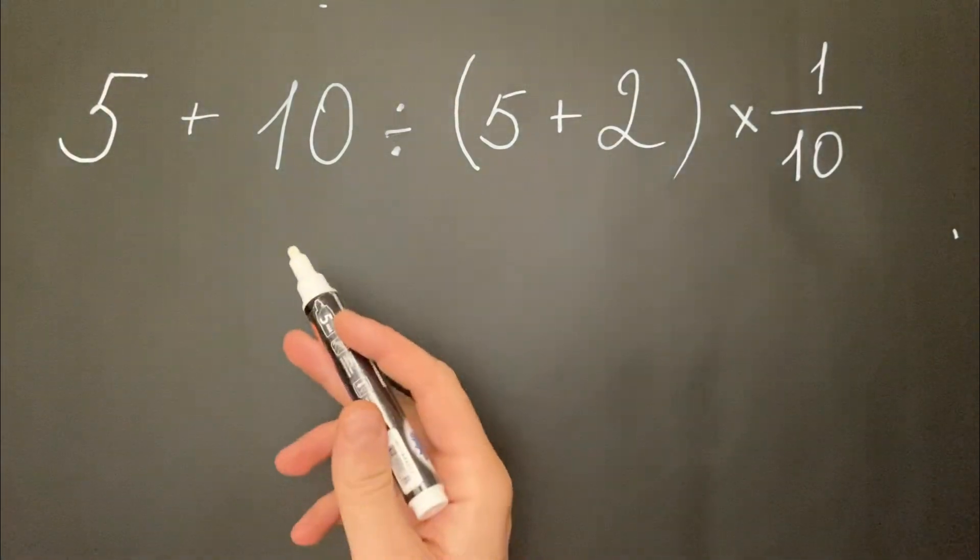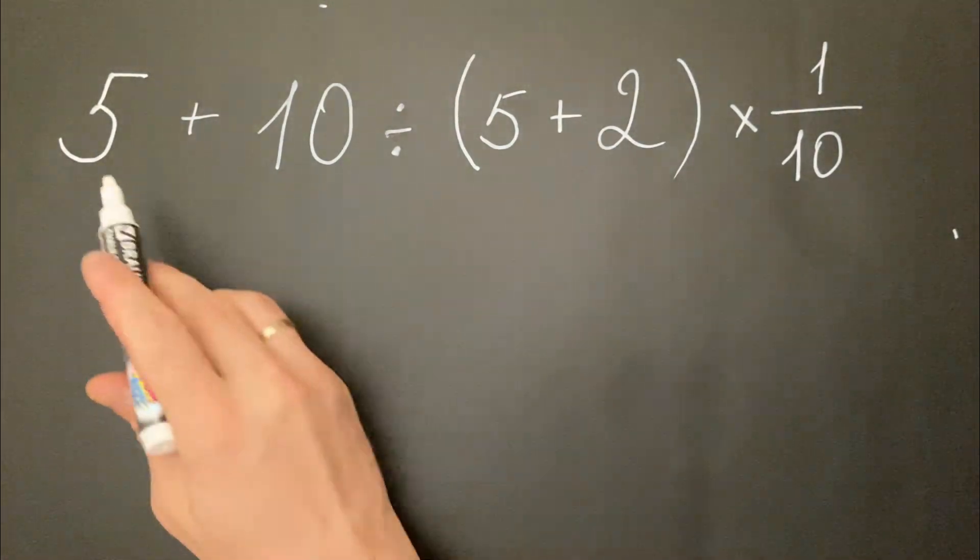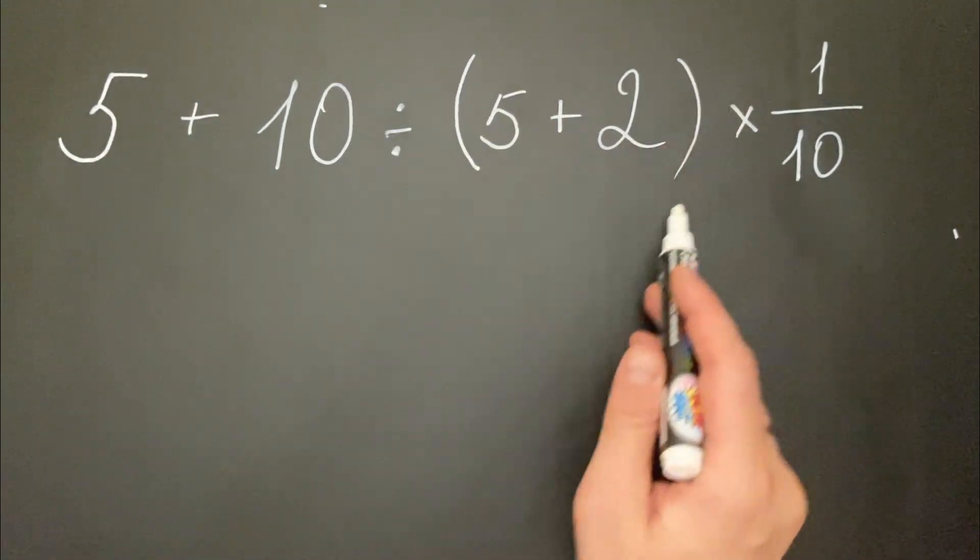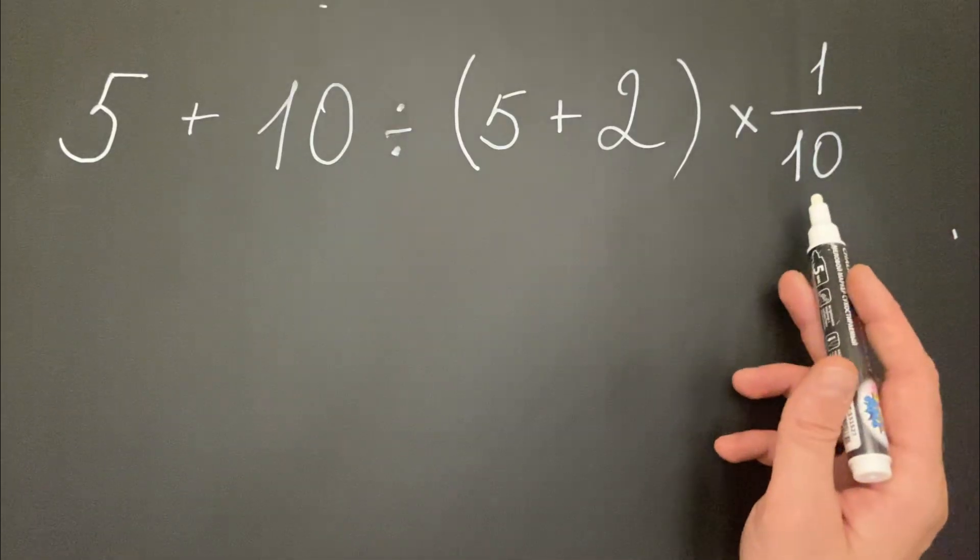Hello everyone! Today we have the following math problem: 5 plus 10 divided by 5 plus 2 in parentheses, multiplied by 1 over 10.